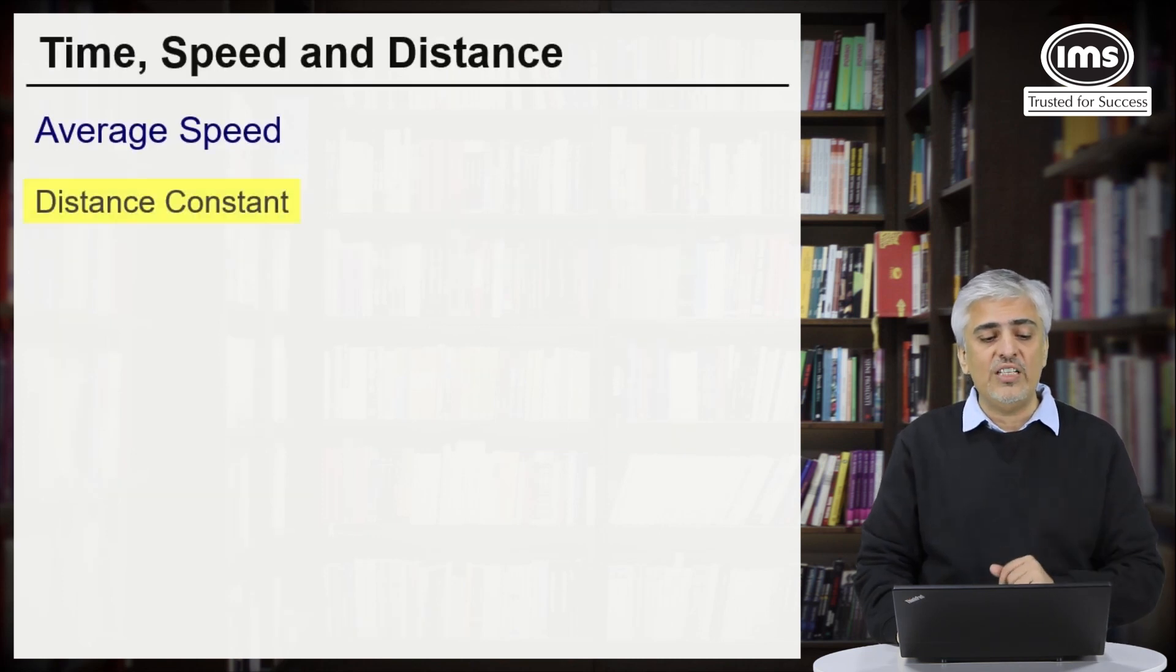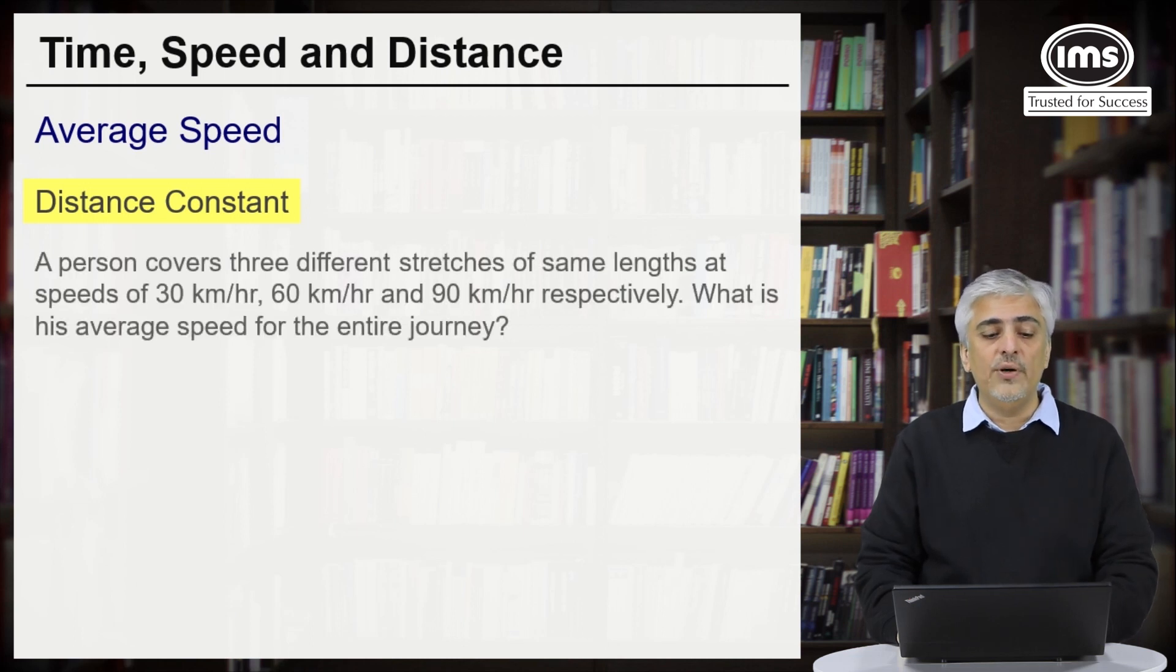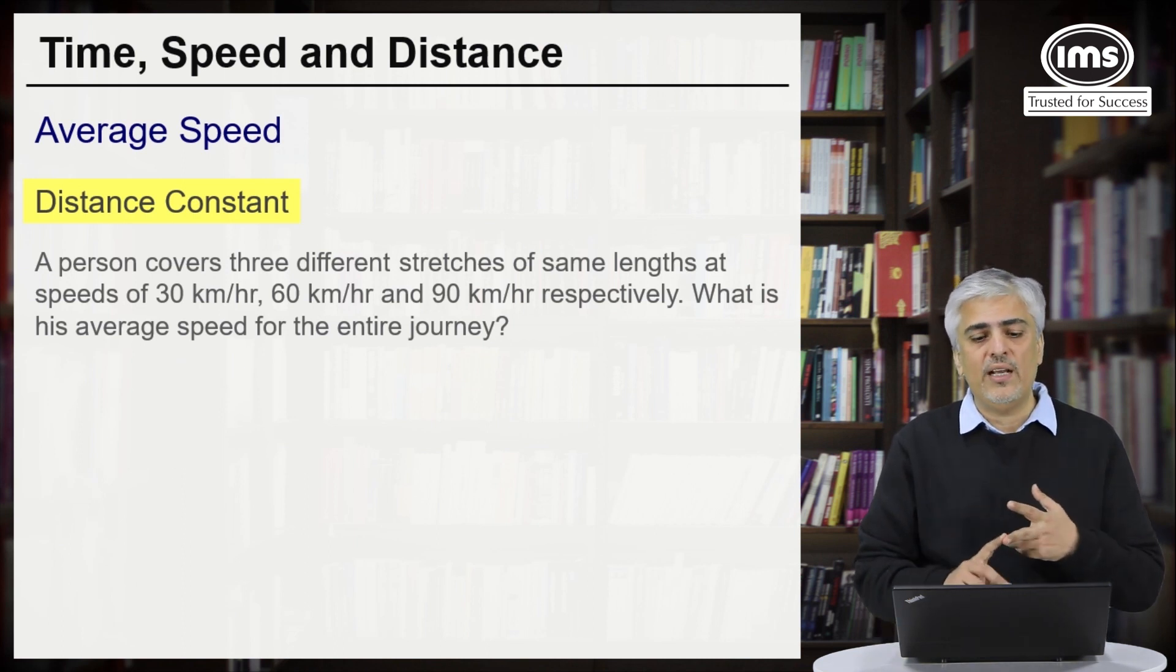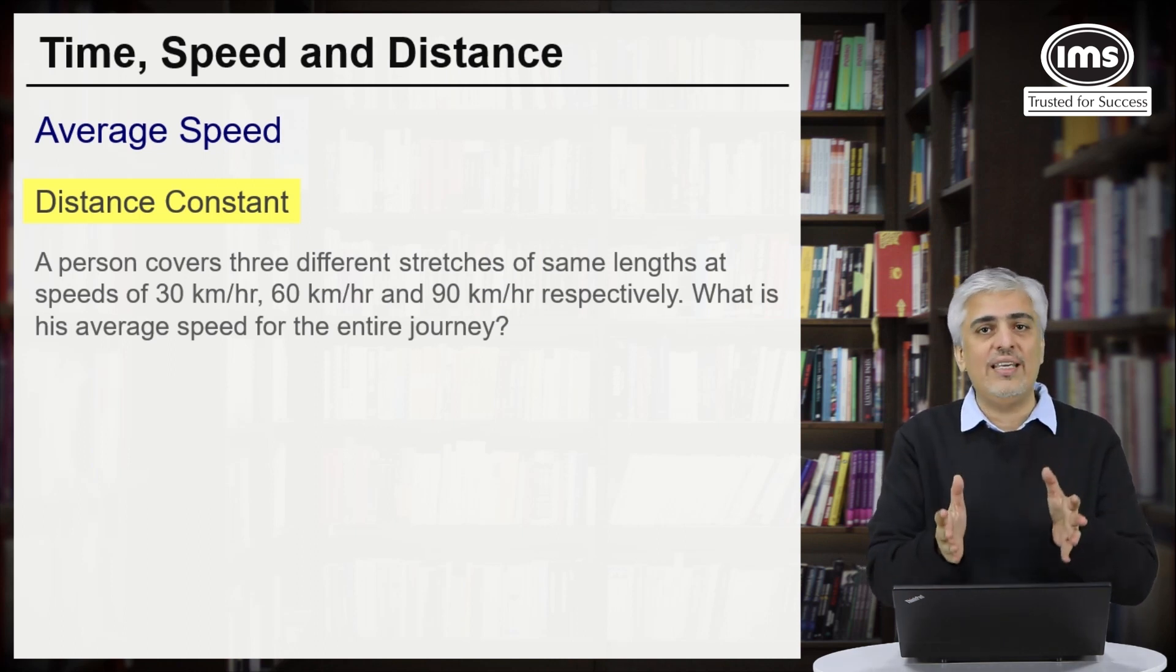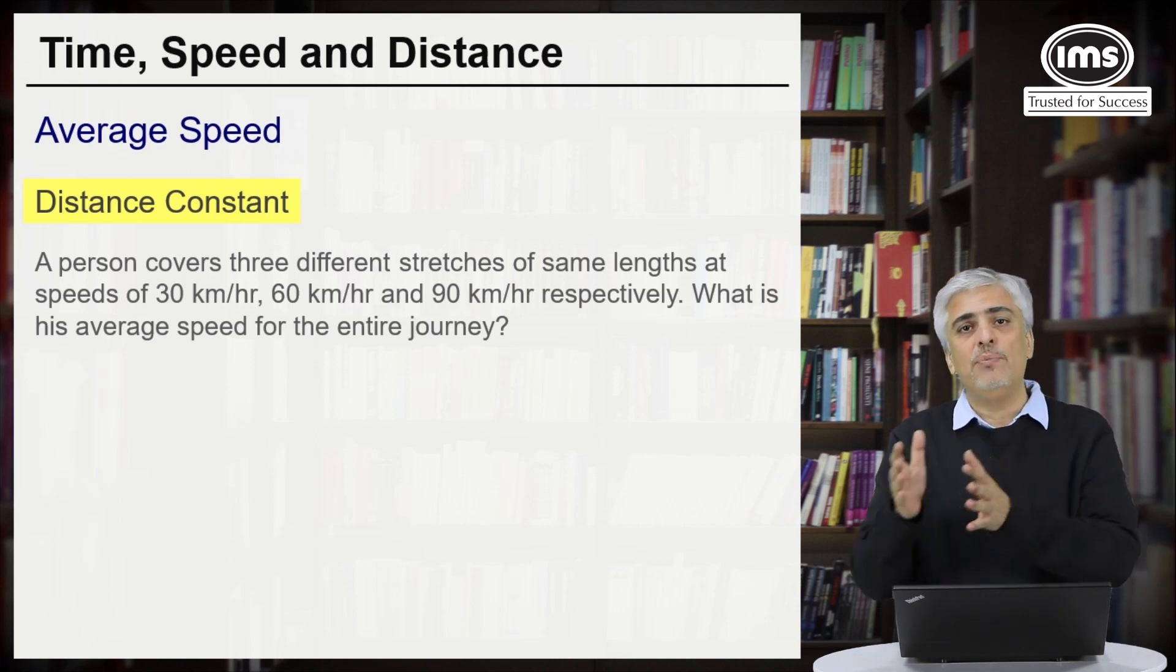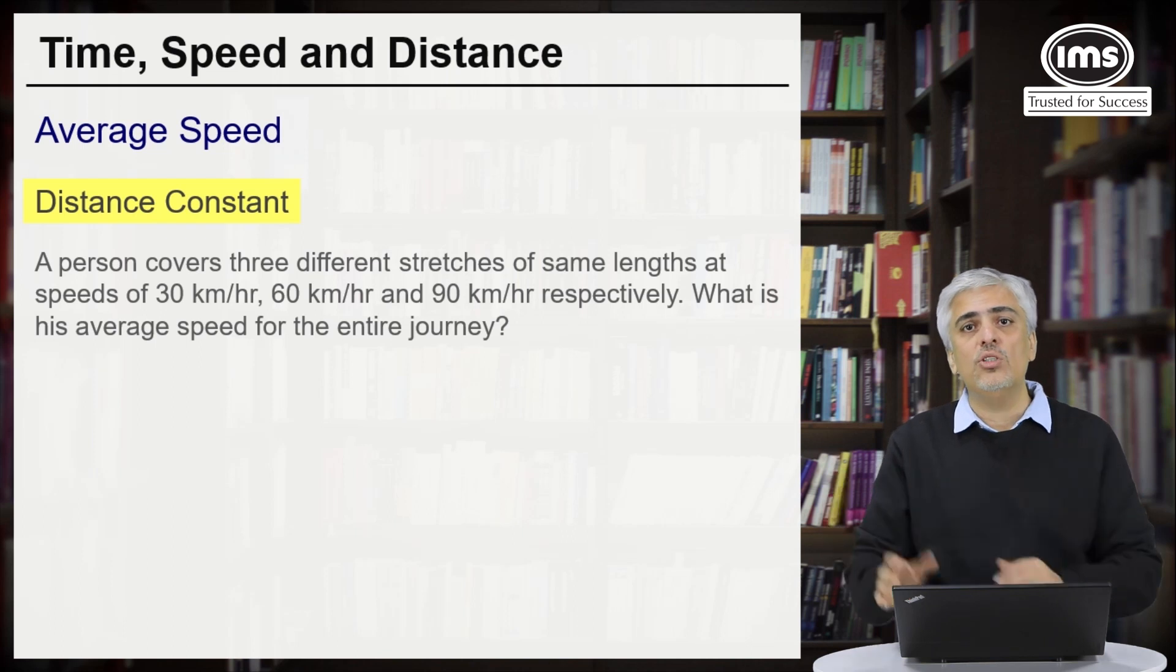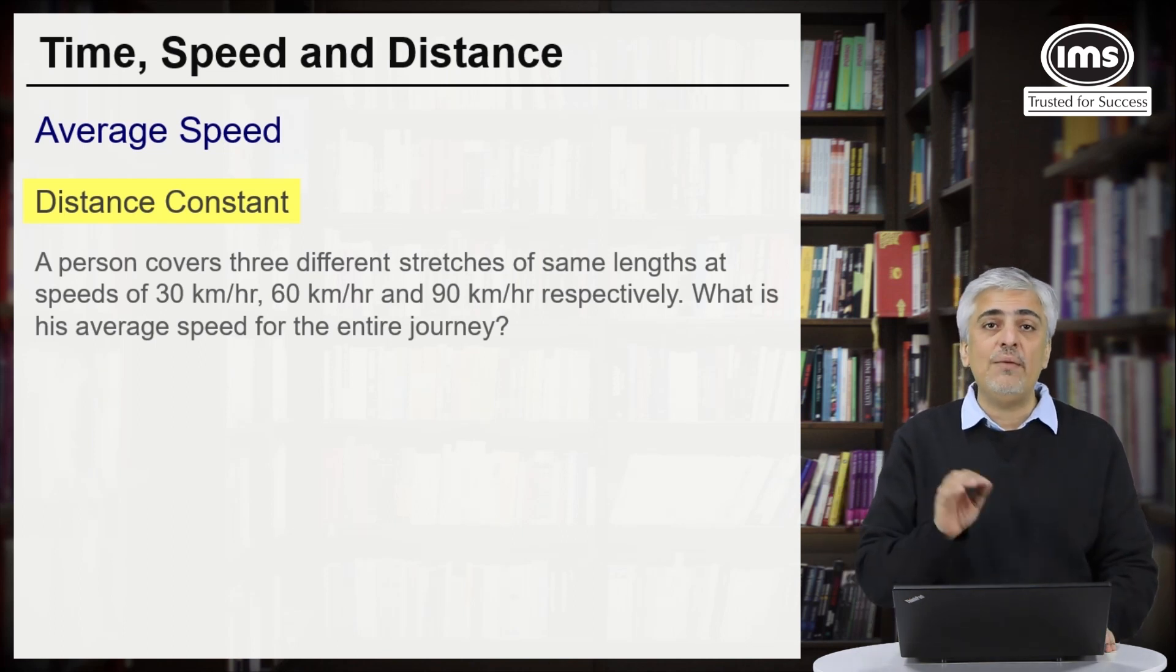The next example of average speed is where distance remains constant. A person covers three different stretches of the same lengths at speeds of 30 km per hour, 60 km per hour and 90 km per hour. What is his average speed for the entire journey? So what's happening over here? He is going from A to B which is say an x distance, B to C same distance, and C to D also same distance. Every time his speed is different.